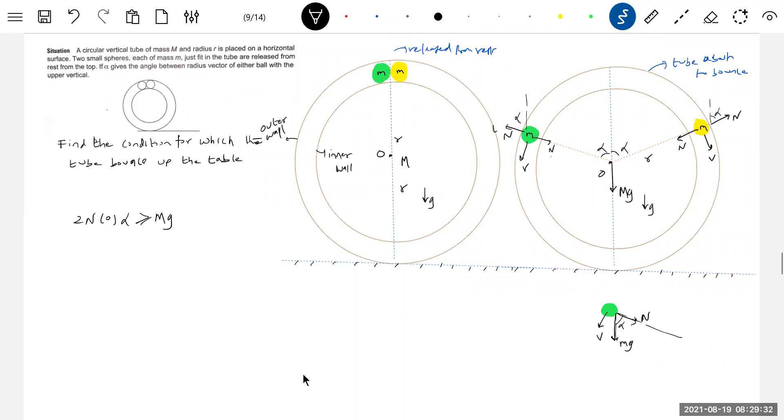mg cos alpha. And this is the velocity. Okay, now we will write the equation of circular motion: mg cos alpha plus n should be equal to mv square by r. But we don't know v. What to do?